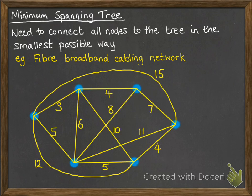If we've got a network something like this, the blue dots can represent the houses that are being connected up for fiber cabling, and we could connect those houses to each other with the weights that are given there. They can represent the meters of cabling that you need to use to connect up the different houses. We obviously don't want to connect every single house to every other house.